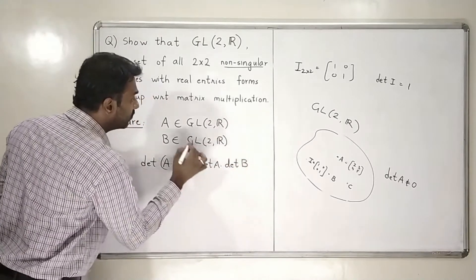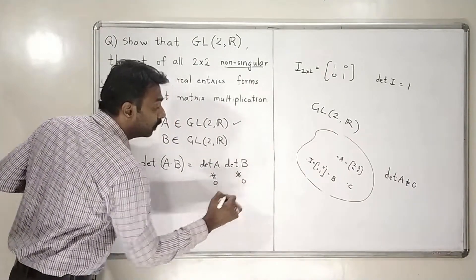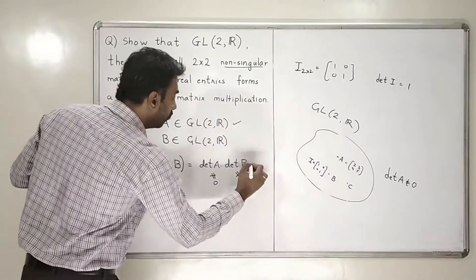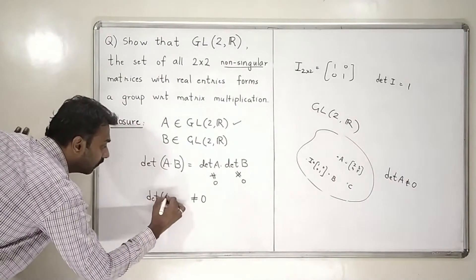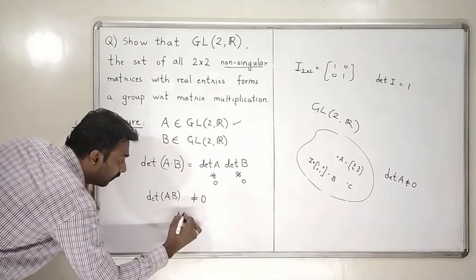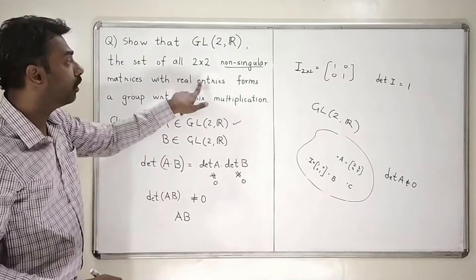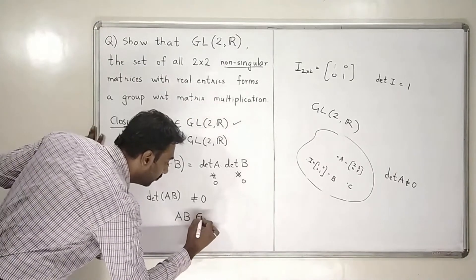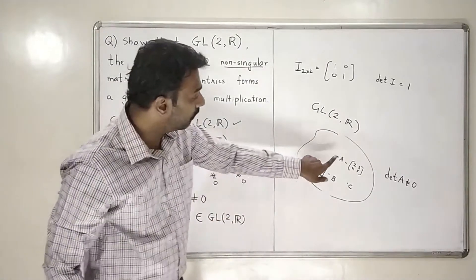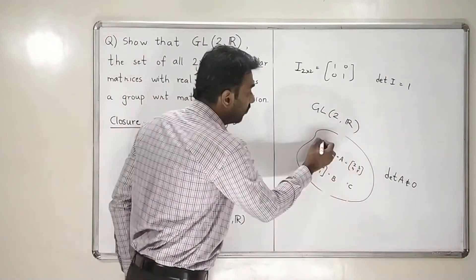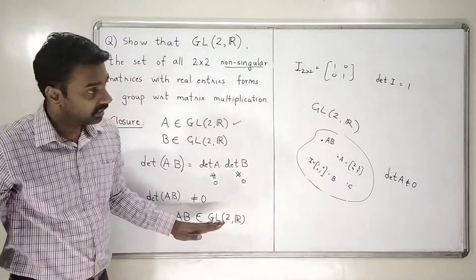We know that A is in GL2R, so this determinant cannot be equal to 0. Even this determinant cannot be equal to 0. So the product also cannot be equal to 0. This means that the determinant of AB is not equal to 0. Therefore it is clear that AB is a non-singular matrix, which is again a 2x2 matrix and also has real entries. Therefore AB obviously belongs to GL2R. So if you have two elements A and B, their multiplication will also be inside the set — it will not go outside. This means that closure is satisfied.